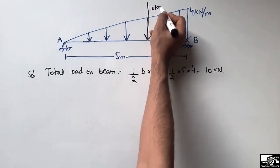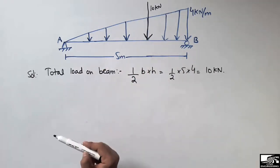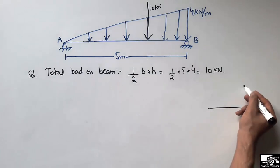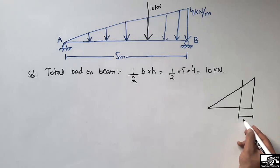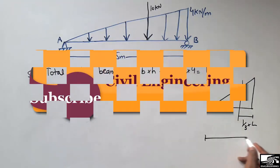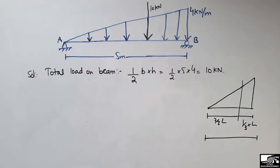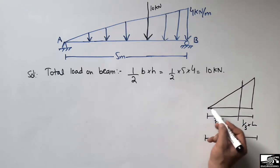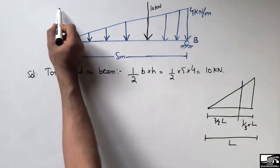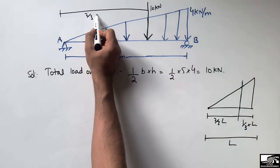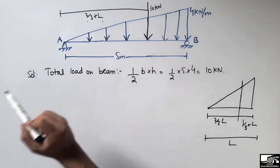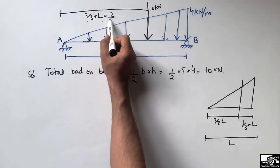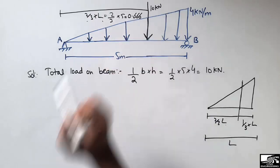Now, at which point is this 10 kN concentrated load acting? We need to find the centroid of the triangle. From the right side of the beam, the centroid is at one-third of the length (1/3 × L), and from the left side it is at two-thirds of the length (2/3 × L). So the distance from the left side is 2/3 × L = 2/3 × 5 = 3.33 meters, and from the right side it is 1/3 × L ≈ 1.67 meters.